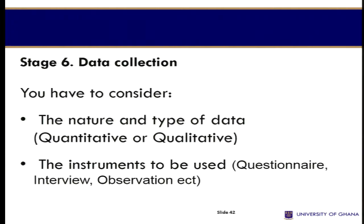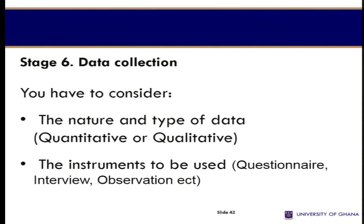Stage six relates to data collection. First you need to consider the nature and type of data to be collected — is it quantitative data or qualitative data? Secondly, you need to determine the instrument to be used. For instance, are you going to use a questionnaire, interview, or observation? The most commonly used data collection methods in scholarly research in the social sciences are the questionnaire, interview, and observation.